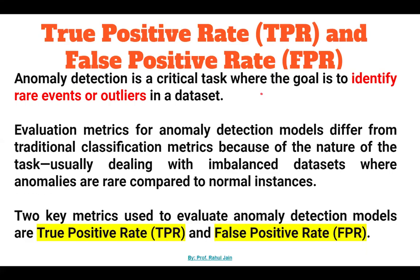Hello everyone. In this session we are going to discuss about true positive rate and false positive rate. Basically these are the metrics in anomaly detection. Anomaly detection is a critical task where the goal is to identify rare events or outliers in a dataset. We are going to look at it with the help of an example and real-world application so that you get the topic easily in simple steps.